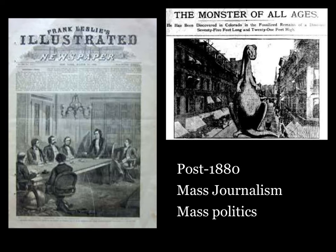Even as elites grumbled that the sensational press was a sign of social decay, up-and-coming people from the working and middle classes believed that mass journalism provided them an avenue to success. As major European cities such as London, Vienna, Berlin, and St. Petersburg became centers of both politics and news, a number of European politicians influential in the late 19th and early 20th centuries would get their start working for daily newspapers.